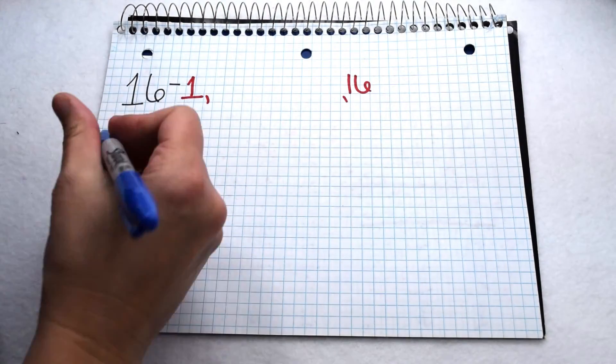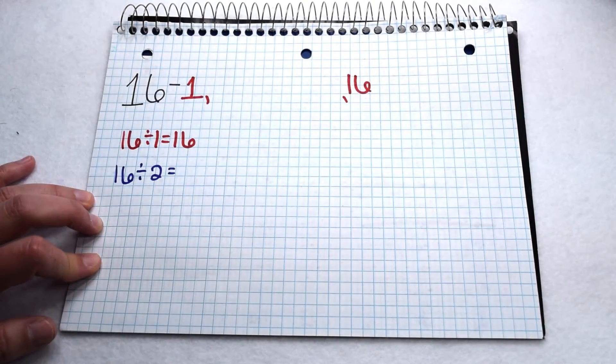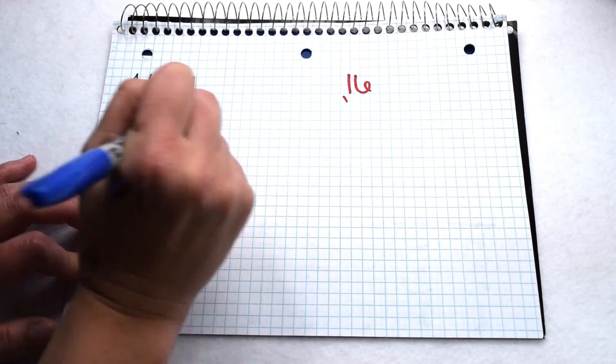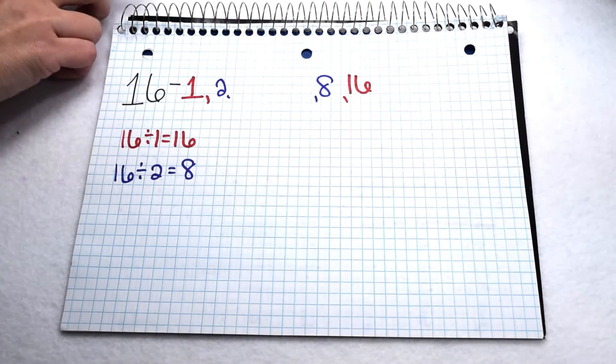From there we can see that 16 is even. That means we know 16 is going to be divisible by 2. 16 divided by 2 is 8 so we know 2 and 8 are also going to be on our factor list of 16.